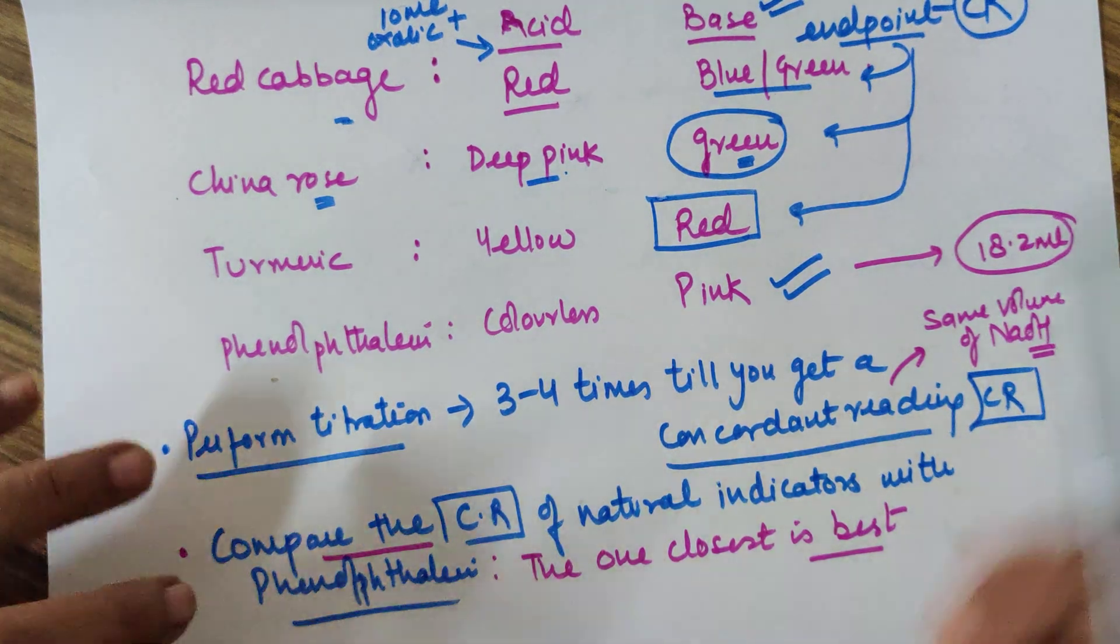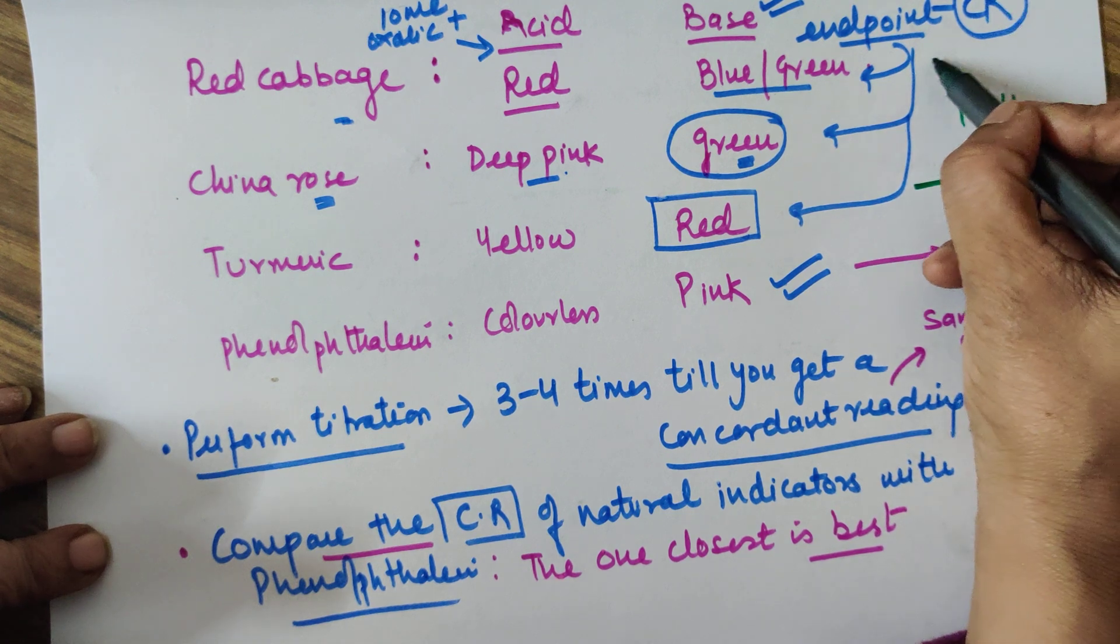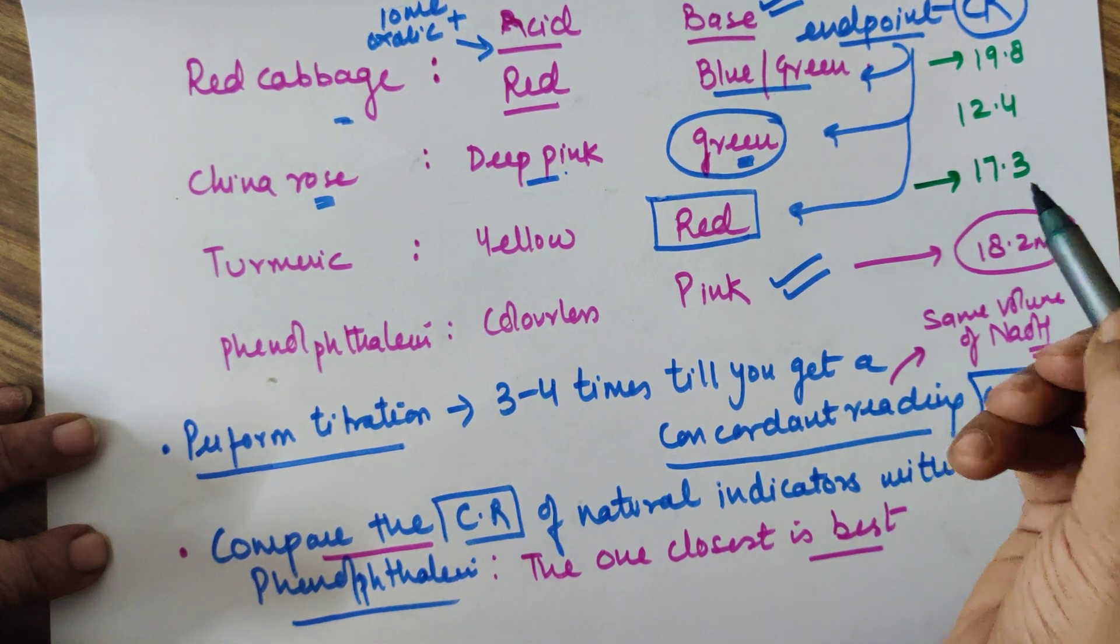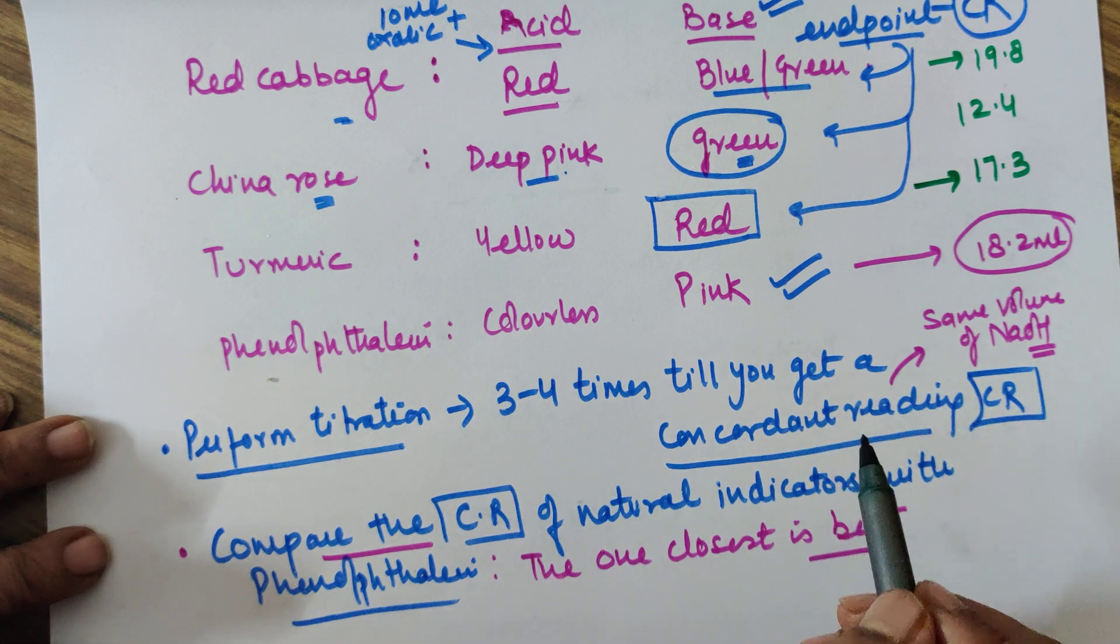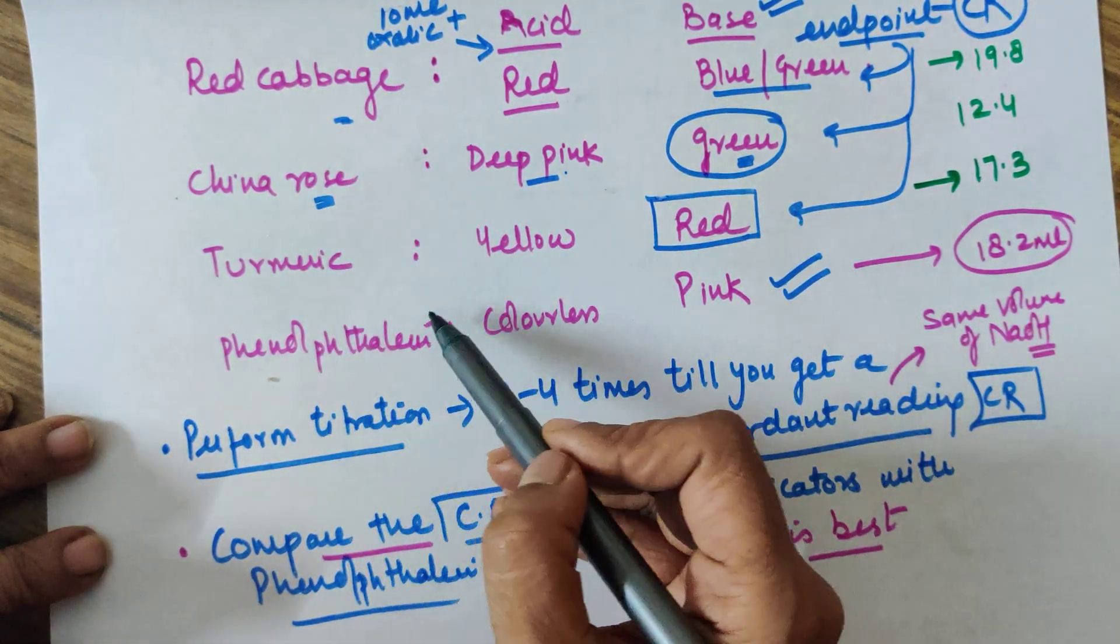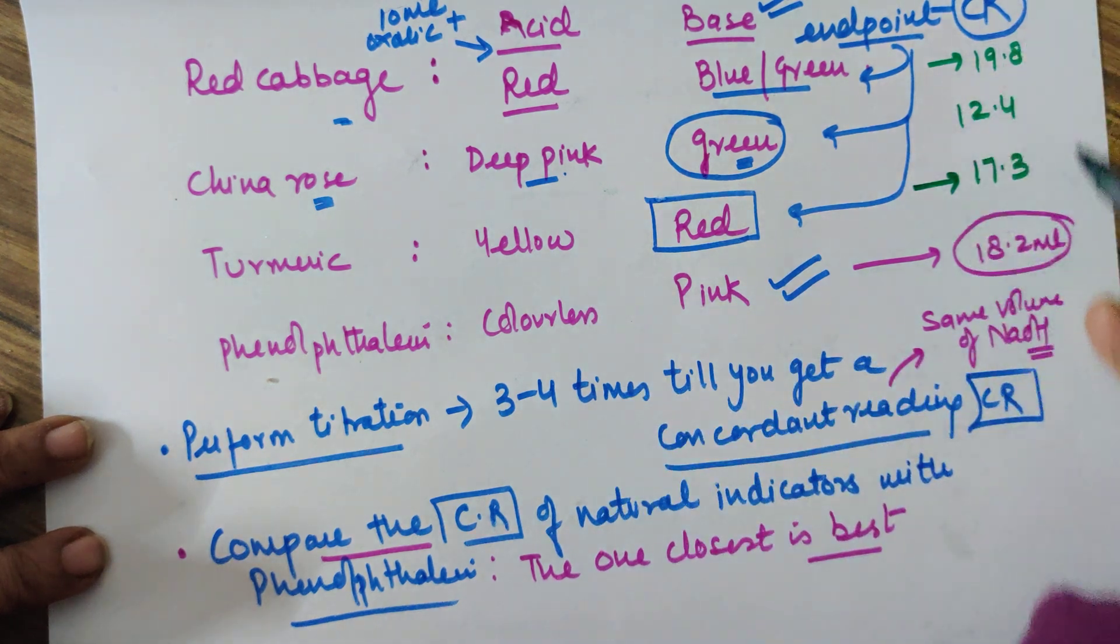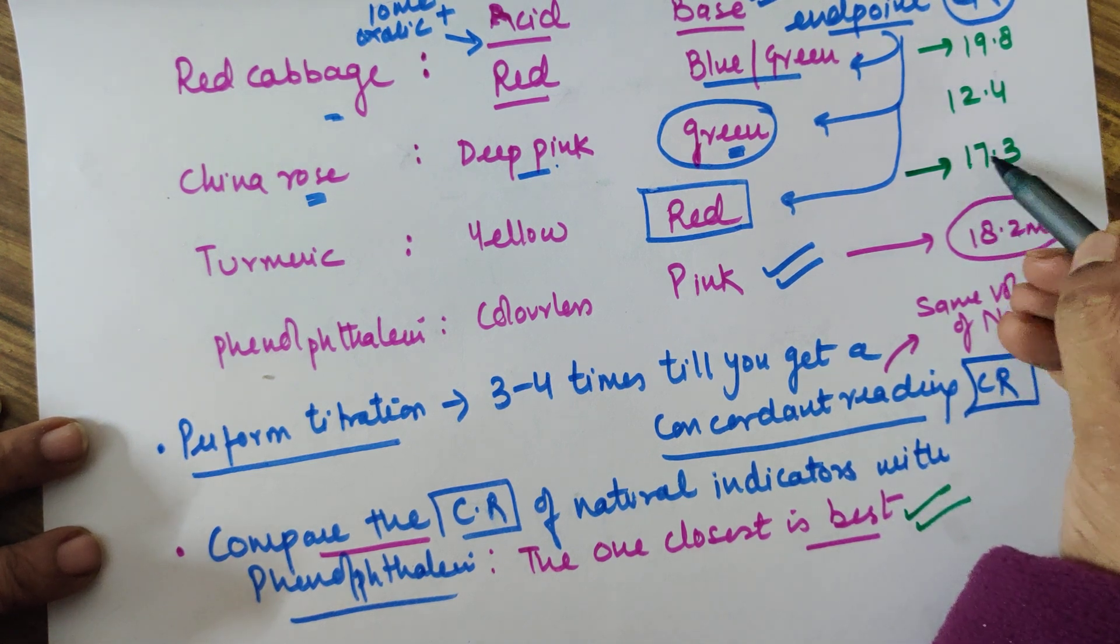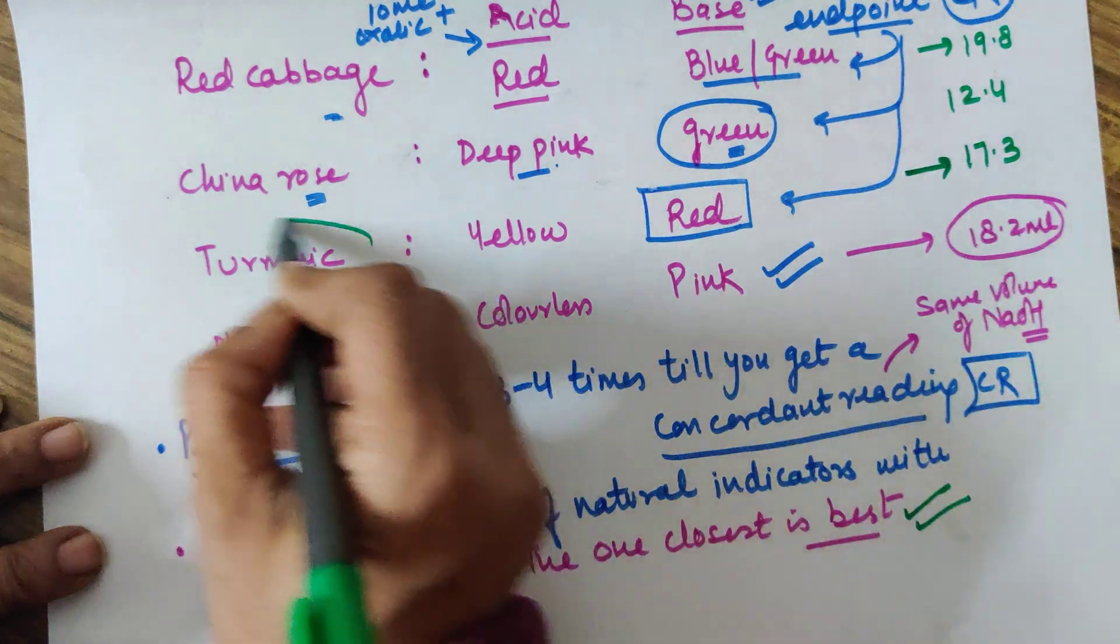For turmeric, it came out to be 17.3, for China rose 12.4, for red cabbage 19.8. These are just weird values, not the values you will get. Please perform the titration. You will make four observation tables for each of the titrations, each one should have at least three to four readings. Then you will get a concordant reading and compare the concordant reading of natural indicators with the phenolphthalein. The one which is closest will be the best. Here, 18.2 and 17.3, there is a difference of 0.9, so according to this, turmeric comes out to be the best.